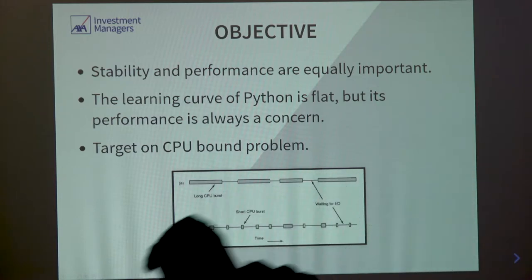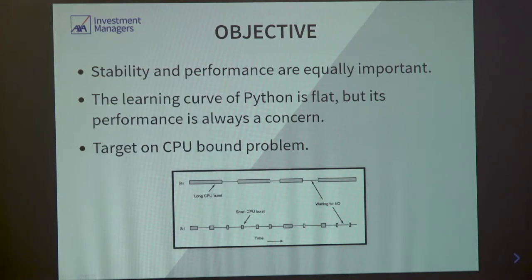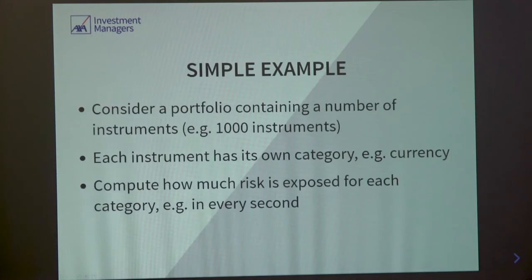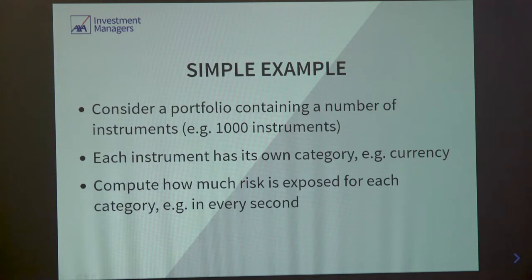Today we are going to focus only on CPU-bound problems. If you're a web developer, you're concerned more about IO problems — that may not be your concern to write C extensions. I will go through a simple example used to benchmark the performance for the different approaches I've mentioned. This is a computation commonly called in financial software, called the computation of risk exposure. Each instrument has its own categories for currency and trading exchange.